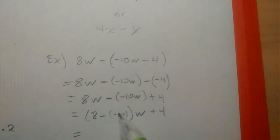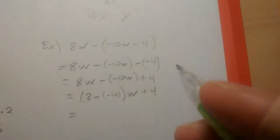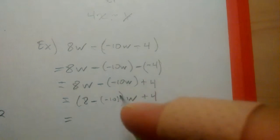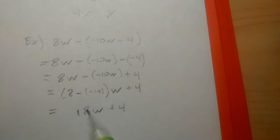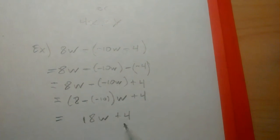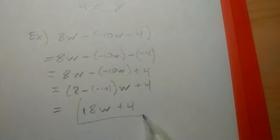So 8 minus a negative 10. After thinking and evaluating, you should come up with 18w plus 4. So that's 18w there. Hopefully this helps. Let me box that up.